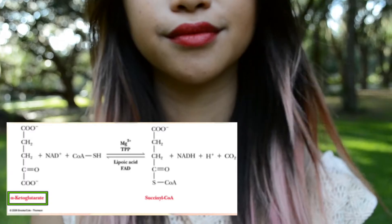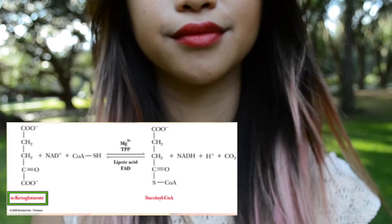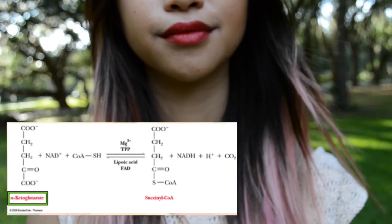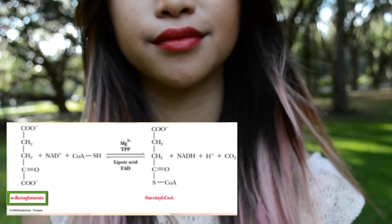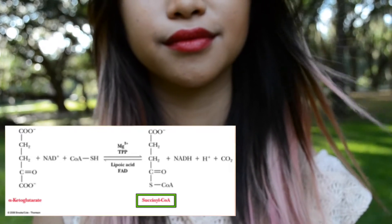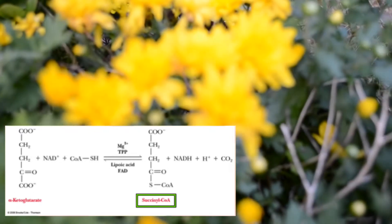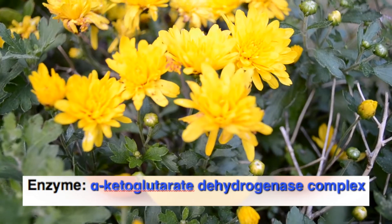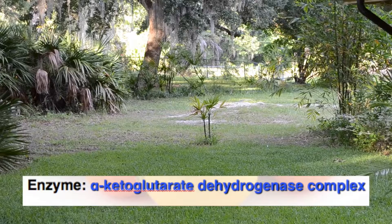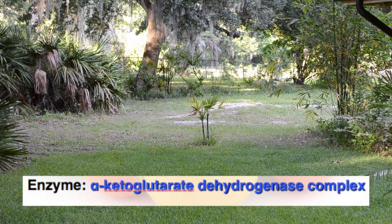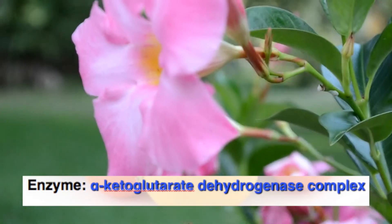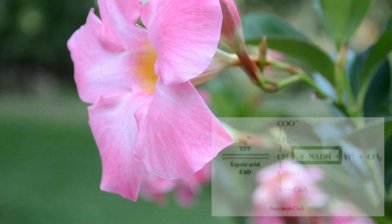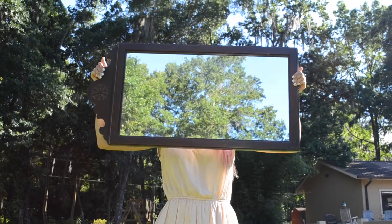Step 4: alpha-ketoglutarate goes to succinyl-CoA, using alpha-ketoglutarate dehydrogenase, forming NADH.